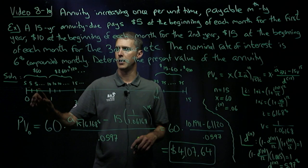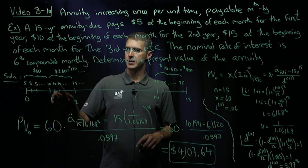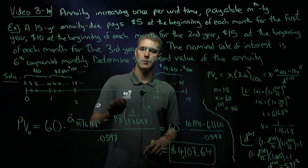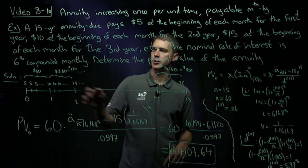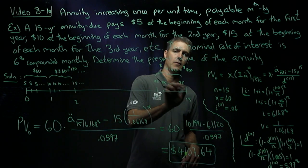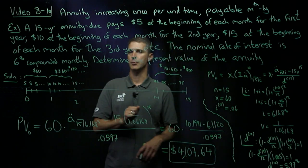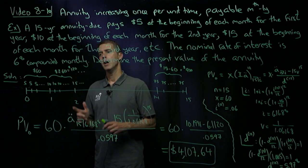The first year at the beginning of each month, it's $5. Second year, it's $10. Third year would be $15. And finally, by the 15th year, I took 5 times 15 to get $75. So $75 at the beginning of each month.